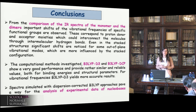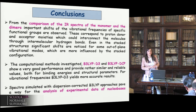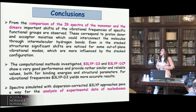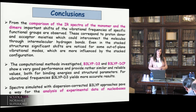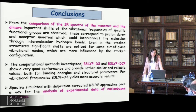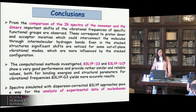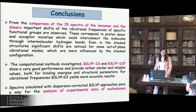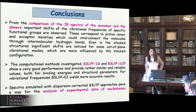When considering nucleobases in condensed phases or adsorbed on solid supports, assignment of spectroscopic features based on gas-phase data could be misleading, leading to incorrect interpretation of the spectra and of the functional groups involved in the interactions. Therefore it is necessary to carry out computational simulations not only for isolated monomers but especially for their complexes. The computational methods D3 and DCP show good performance and provide rather similar and reliable values both for binding energies and structural parameters. For vibrational frequencies, D3 yields more accurate results. Spectra simulated with dispersion-corrected B3-LYP approaches pave the way for the analysis of experimental data on nucleobases complexes.